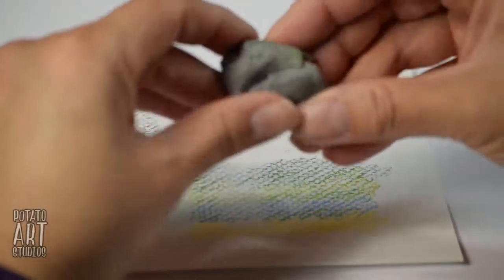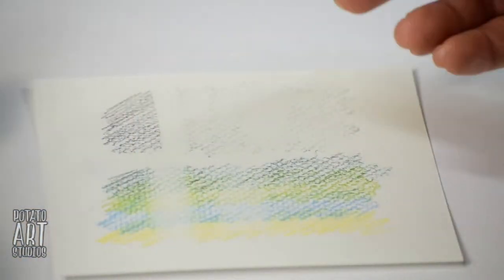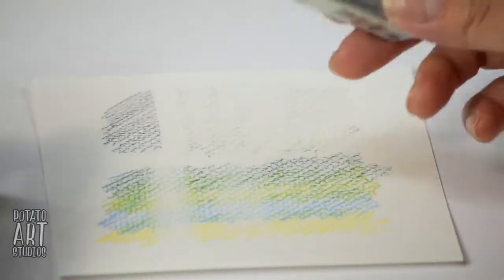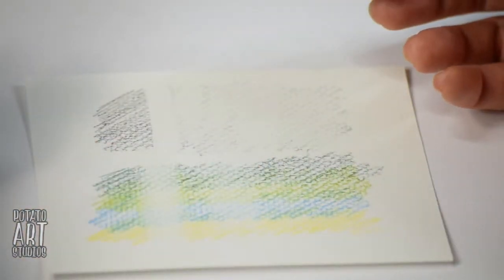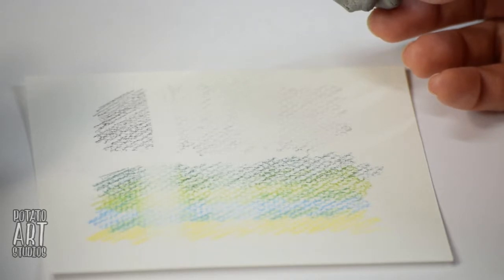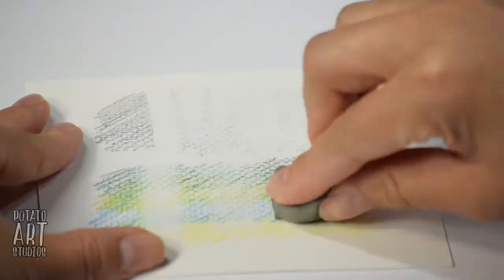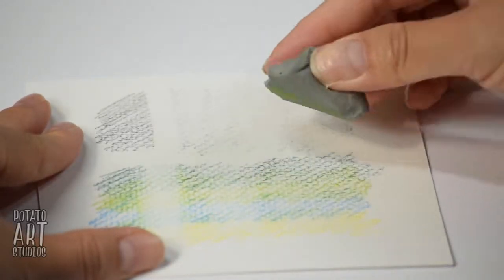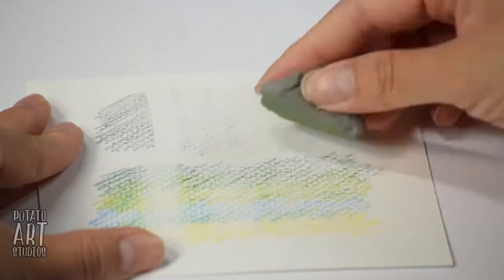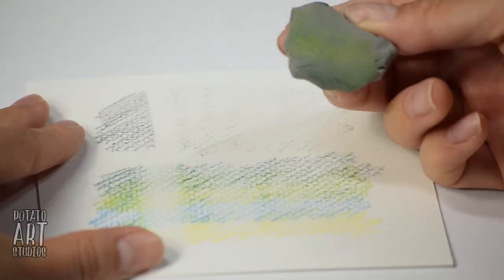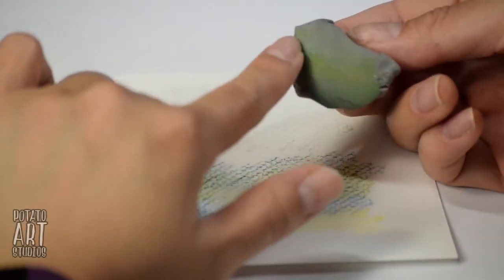So what I like to use a kneaded eraser for is basically just lightening areas. So if I need to clear off an entire area, I'll go in with my regular white eraser. But if I colored, say something orange, but I realized, oh, that orange is way too bright, I need to tone it down a bit, I can actually go over and just press my eraser onto that area and just lightly use the tacky surface of the eraser to pick up the pigment. And it does a decent job of it.